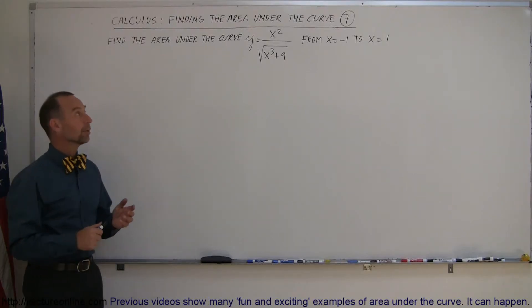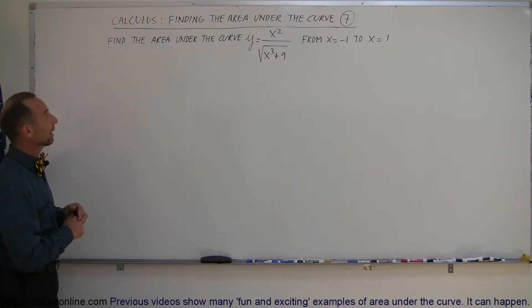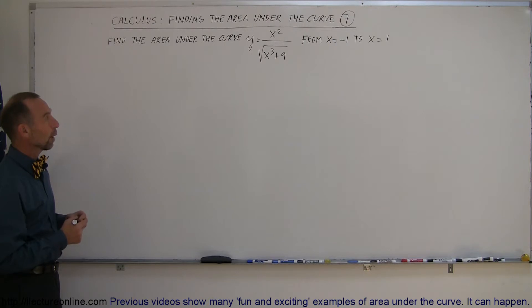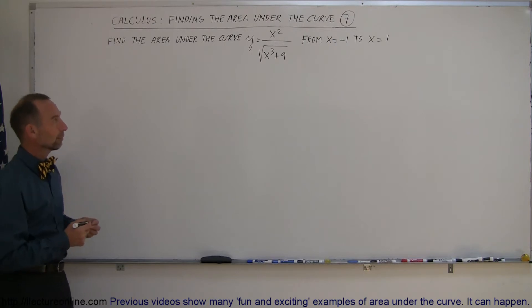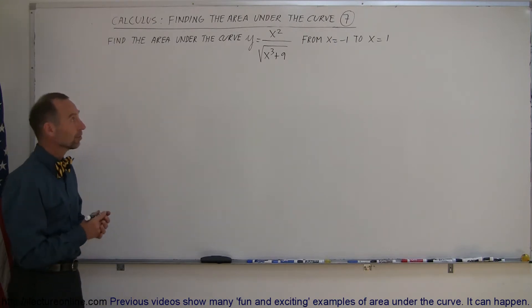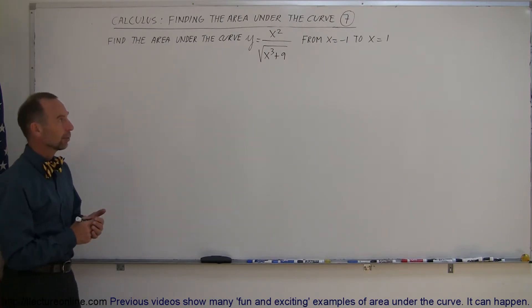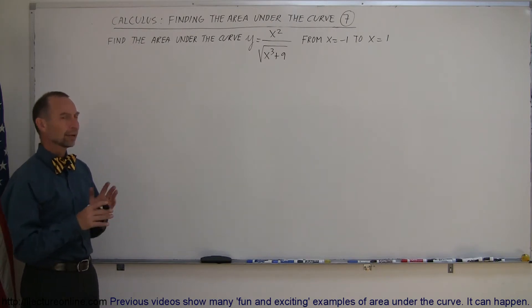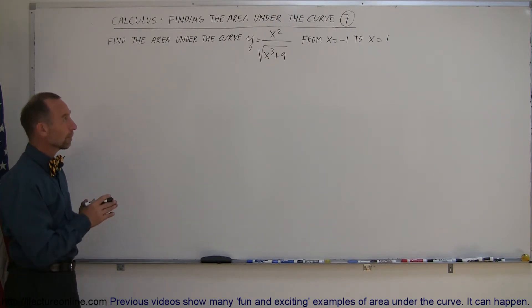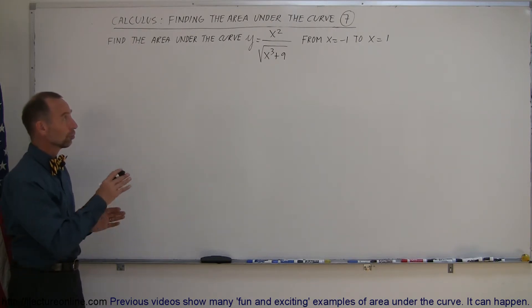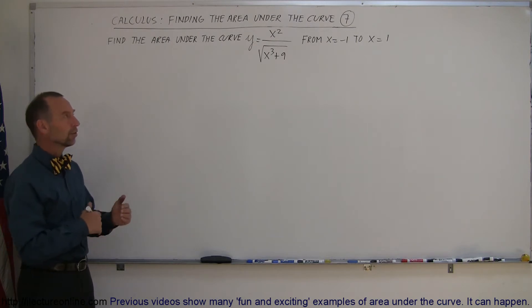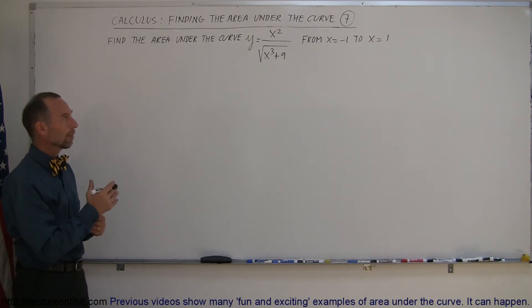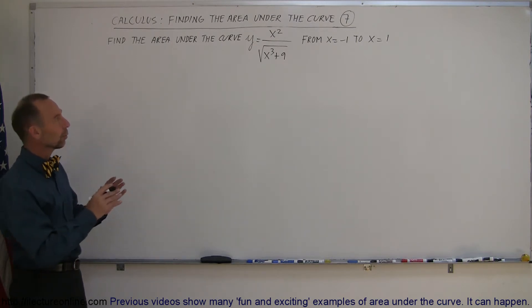Our last example of how to find the area under a curve involves an interesting equation: y equals x squared divided by the square root of x cubed plus 9, evaluated from x equals negative 1 to x equals 1. I chose that one because we're probably going to use the method of substitution to find it, and also to see how you can graph that at least to some extent.